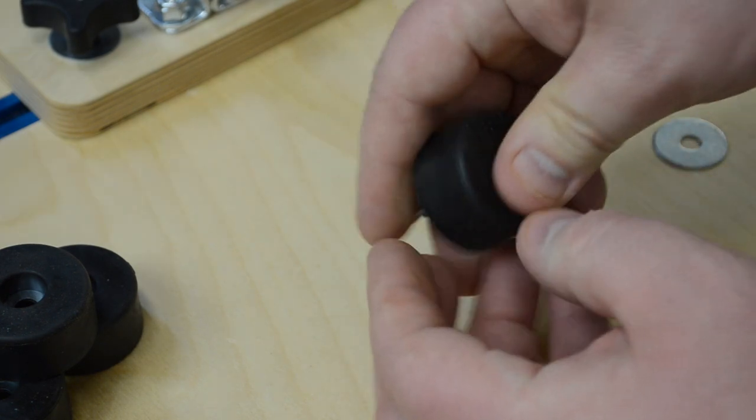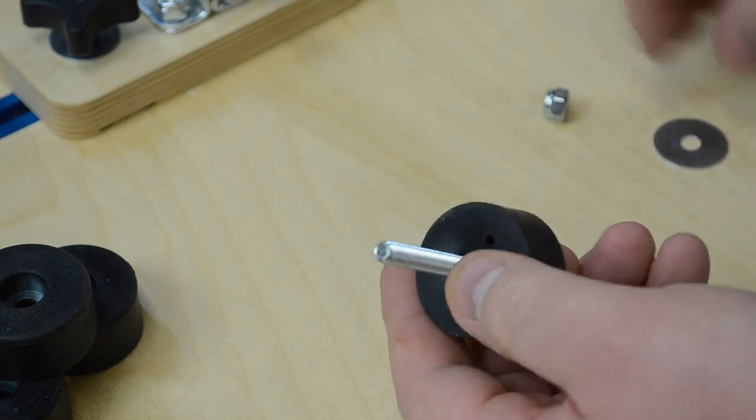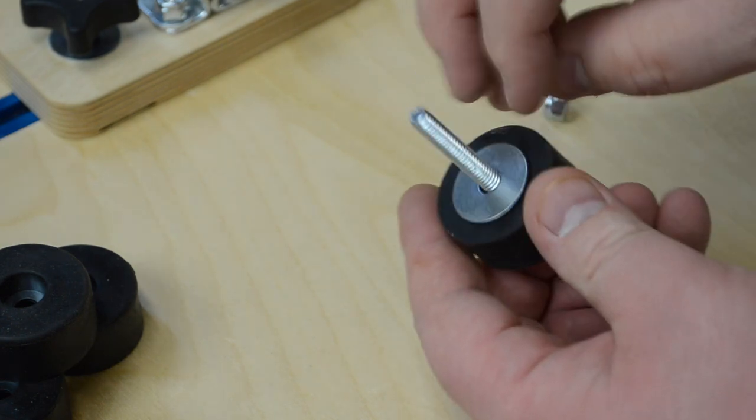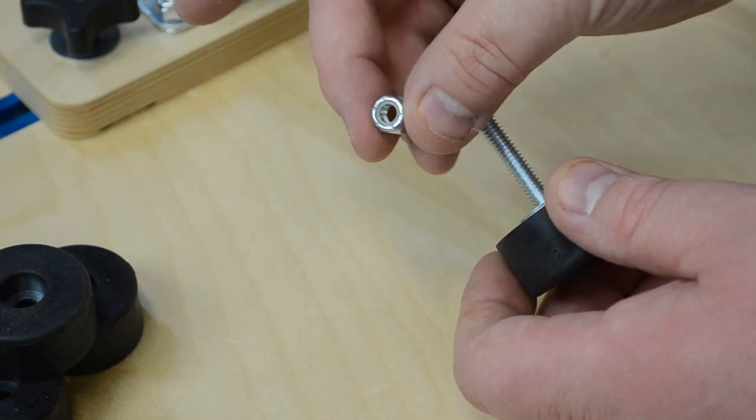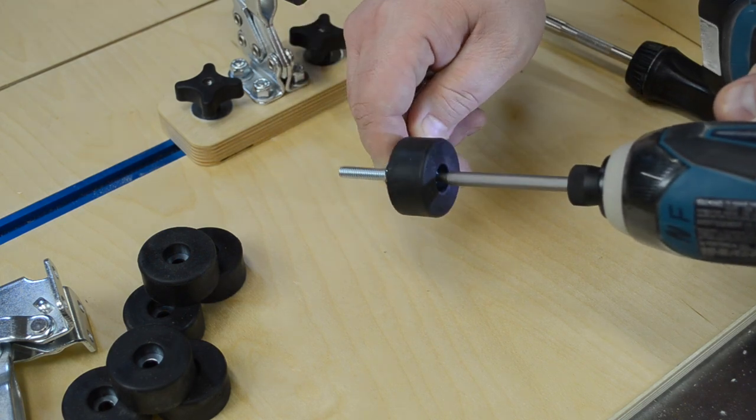Take a quarter 20 machine screw and insert it into the rubber part. Add a fender washer and then a nylon lock nut, and tighten everything down.